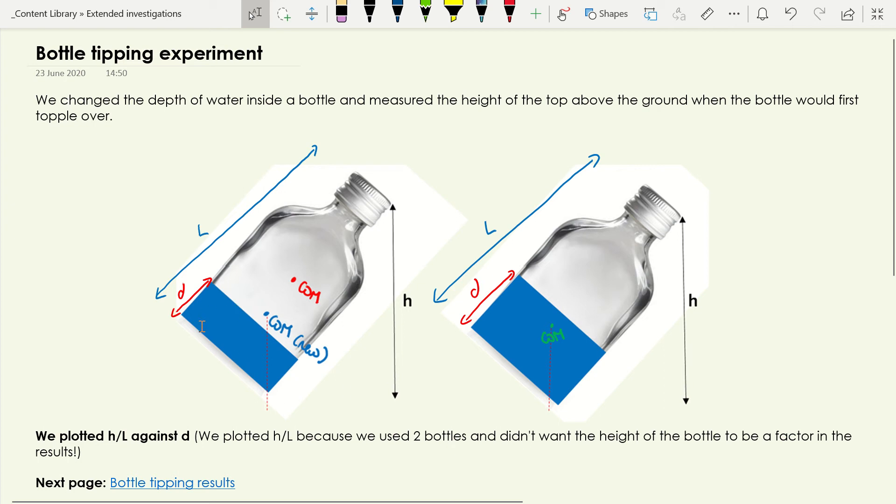We were interested in how the depth of water affected this height. Because we used two different bottles for this and we didn't want the bottle height to be a factor in this experiment, we plotted h over l, so the height as a fraction of the overall length, so that we can use several different types of bottles and that doesn't matter. So that's our experiment and we end up with an h over l versus d graph, with d being the depth of water, h being the height of the top when it topples, and l being the whole length of the bottle.